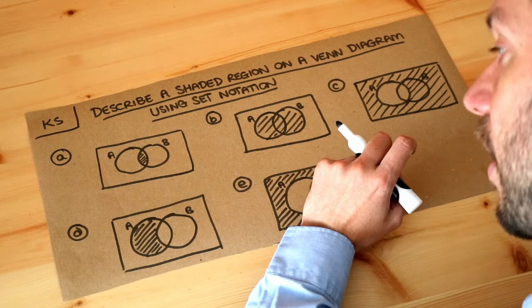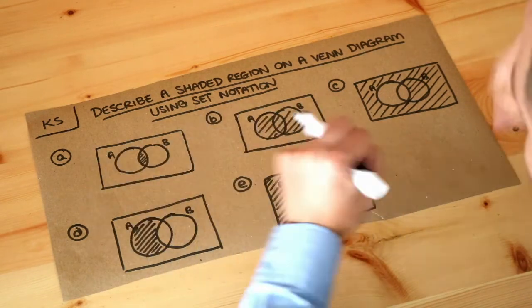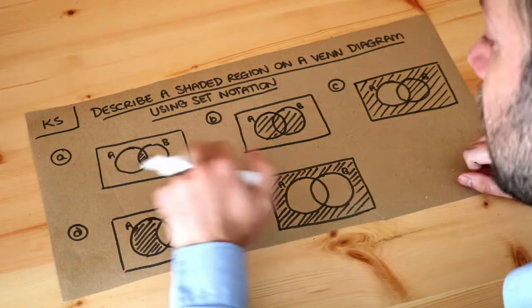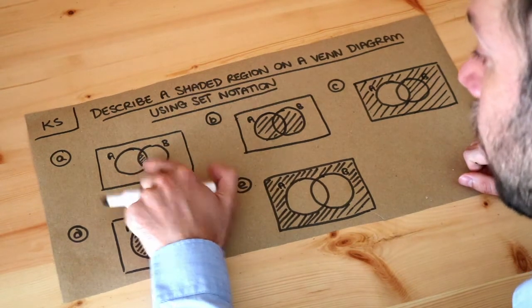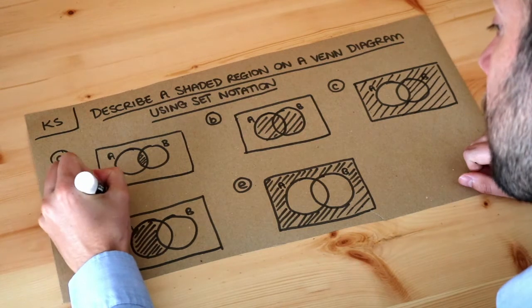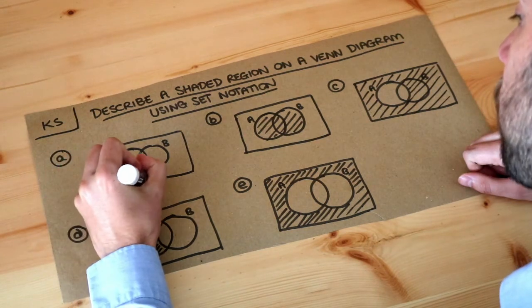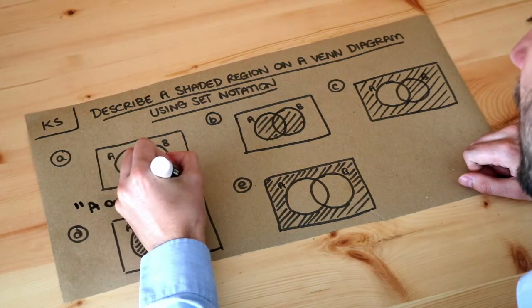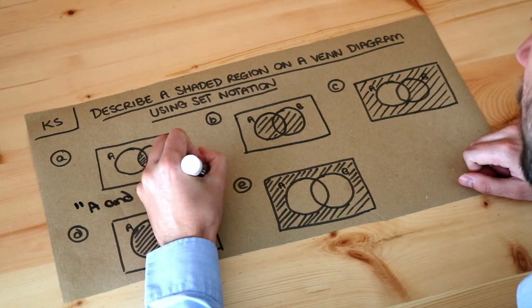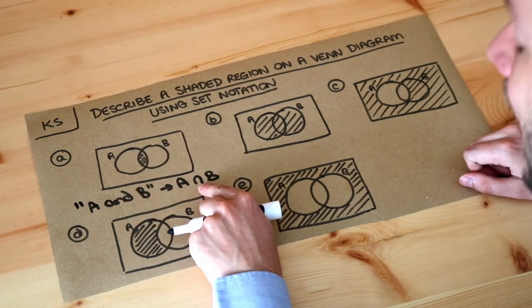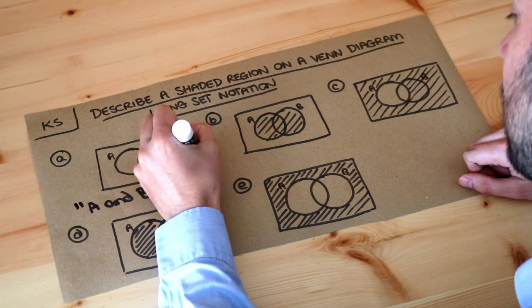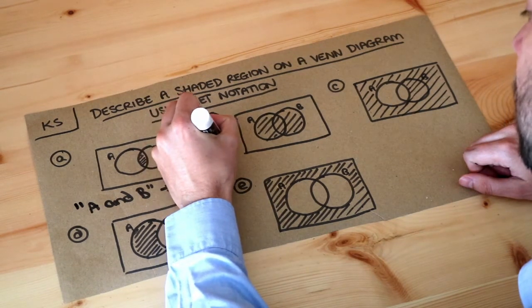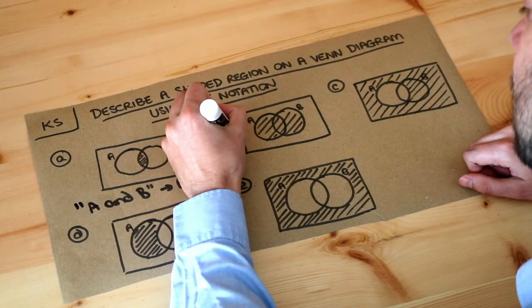Now we have special notation to represent combinations of sets. If you want to represent all the things which are in A and in B, so in the overlap, then the way we would write that is A intersection B. This symbol is actually known as the cap symbol, and it means the intersection of A and B - the things that are in A and in B.